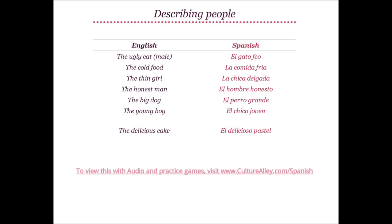Let's use these adjectives in some examples. The ugly cat, assuming a male cat, translates to el gato feo. The cold food becomes la comida fría, where food is comida. The thin girl is la chica delgada — thin becomes delgada as girl is feminine. The honest man translates to el hombre honesto — man is hombre, hence honest becomes honesto, ending in O for a masculine noun. The big dog becomes el perro grande; grande does not change for male or female. The young boy is el chico joven. And the delicious cake translates to el delicioso pastel, where cake is pastel.